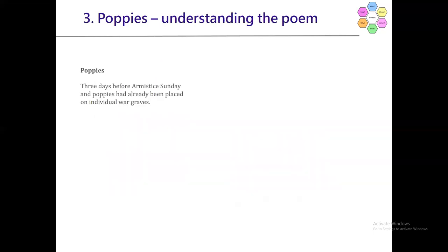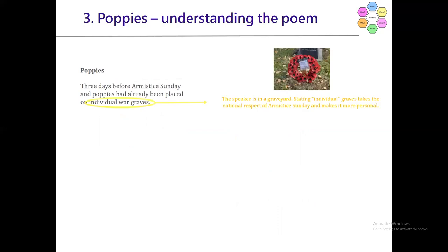Now we'll start going through the poem bit by bit, making sure we don't leave any little moments that might be significant. So: three days before Armistice Sunday and poppies had already been placed on individual war graves. The speaker here is in a graveyard. Stating individual graves is interesting because it takes the national respect of Armistice Sunday and makes it more personal — that might become more important later on.